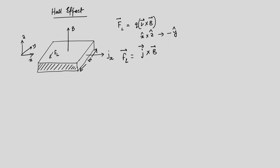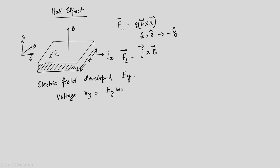Because of these charges building up on the shaded wall, an electric field E_y develops in the y-direction. If W is the width shown, that results in a voltage V_y = E_y × W. This voltage — specifically its sign — tells you about the nature or properties of the charge carriers responsible.